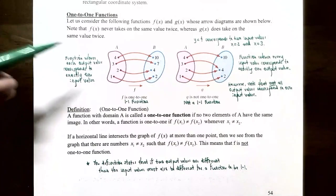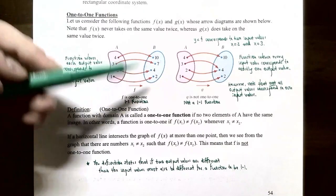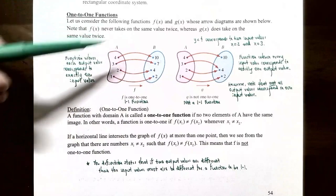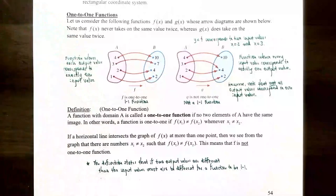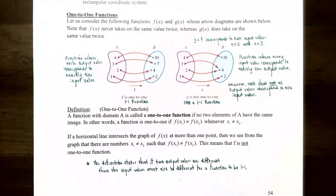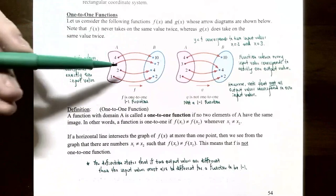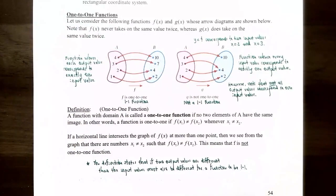Let's start with one-to-one functions. Consider two functions, f(x) and g(x), with two different arrow diagrams. Notice that f(x), the function on the left, maps 4 to 10, 3 to 7, 2 to 4, and 1 to 2 from the domain of f to the range of f. The function f(x) never takes the same value twice — every single y value in the range has exactly one corresponding x value. Every single y value is used exactly one time.